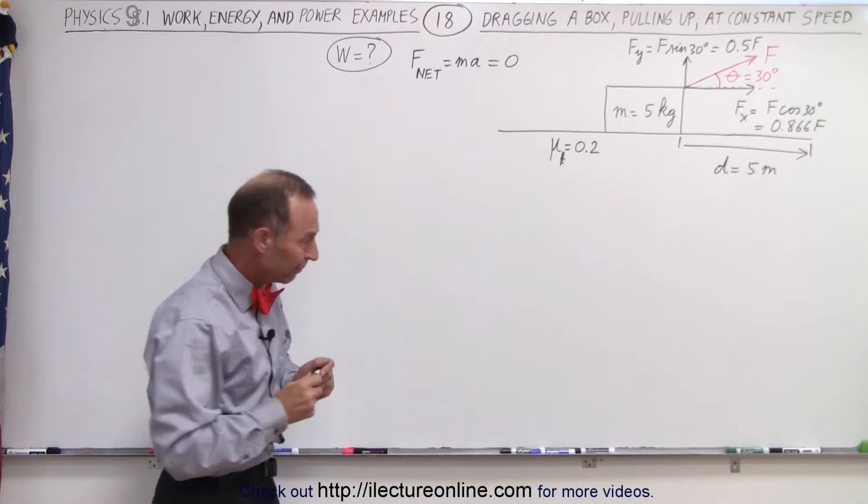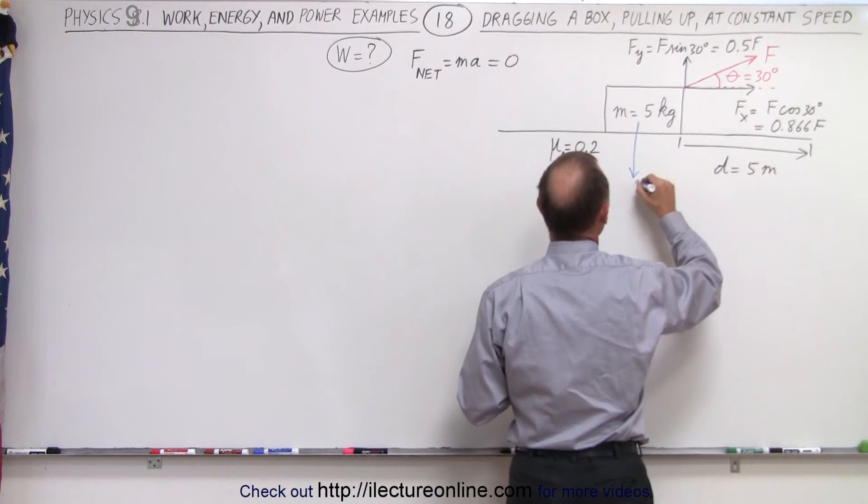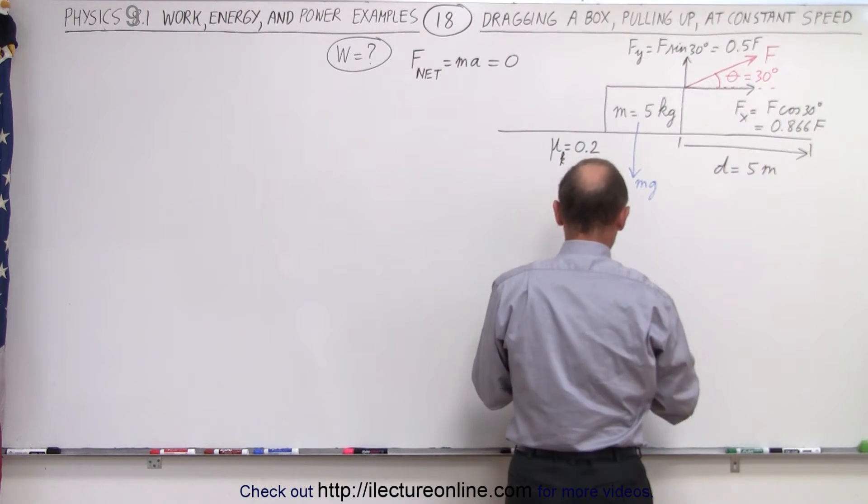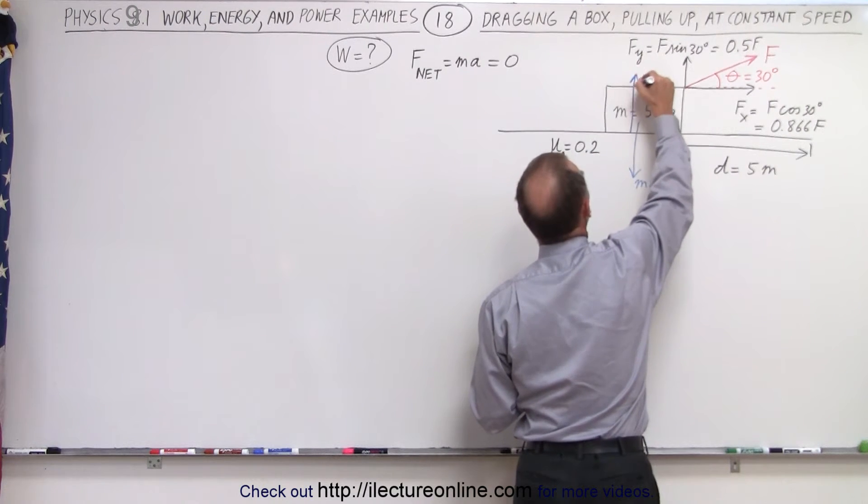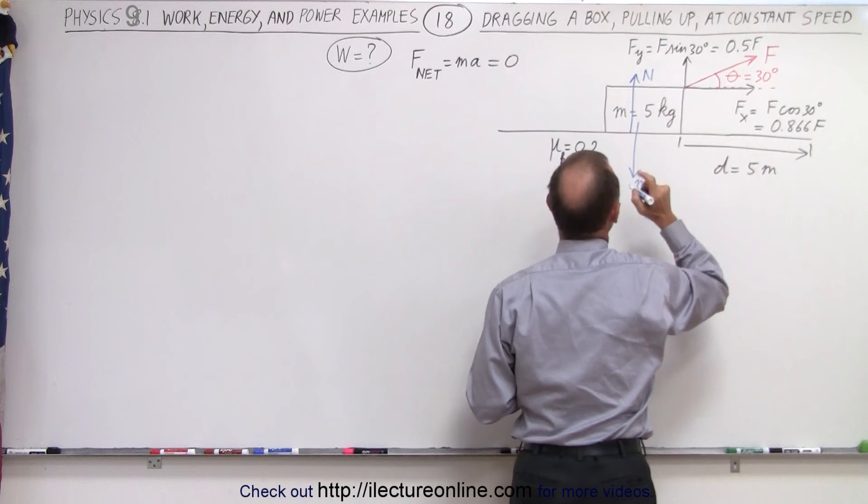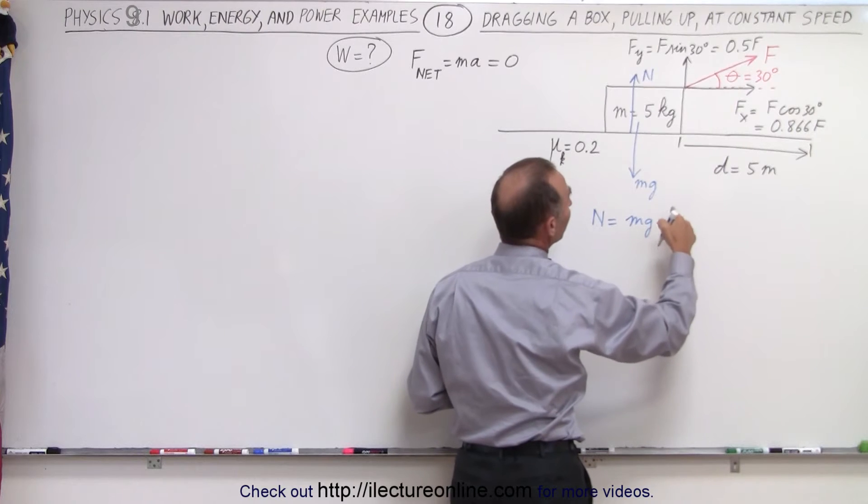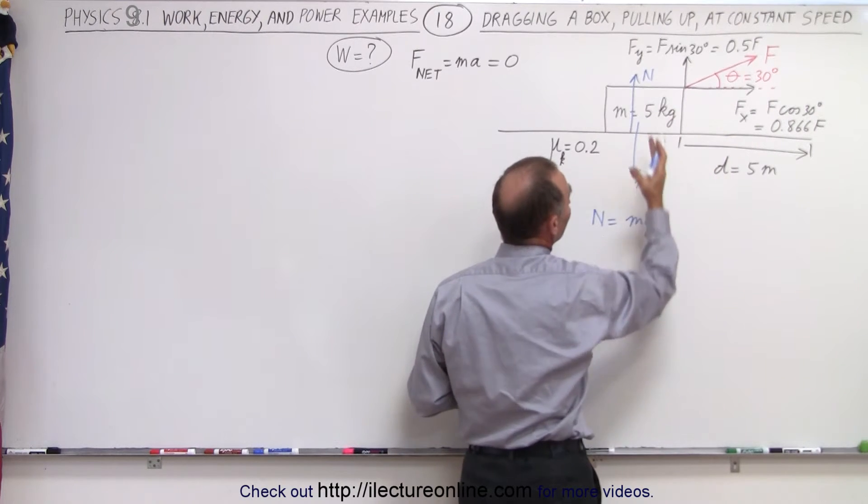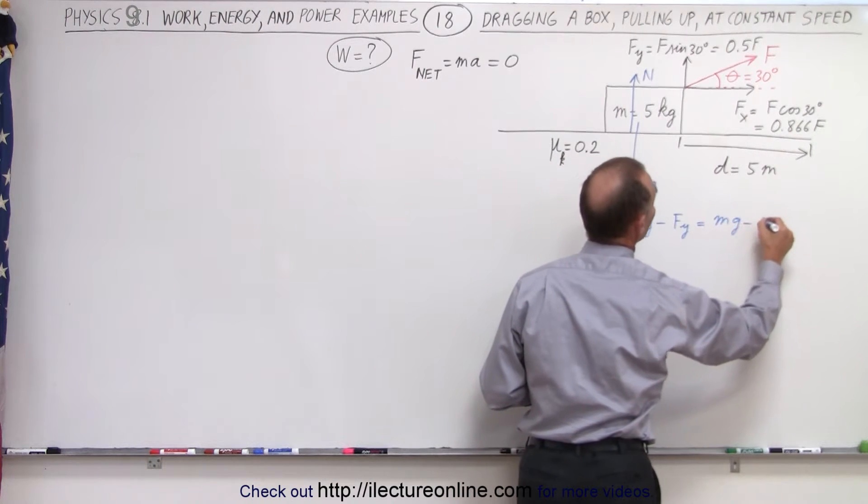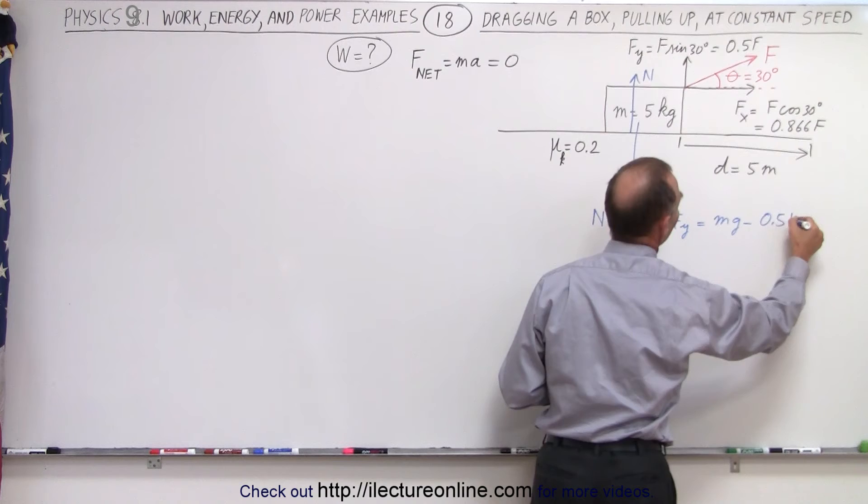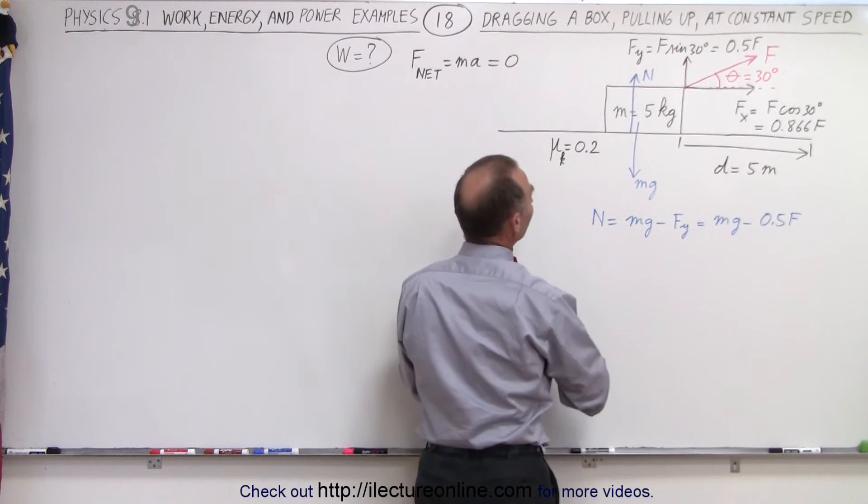So we need to then find all the forces acting on this object. We have the force mg acting downward, and then we have the normal force pushing back. The normal force is going to be equal to the weight of the block mg minus the component of f that's pulling upward, so that's minus f_y, which means that this is equal to mg minus 0.5f.